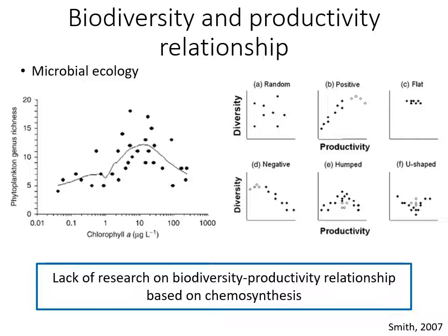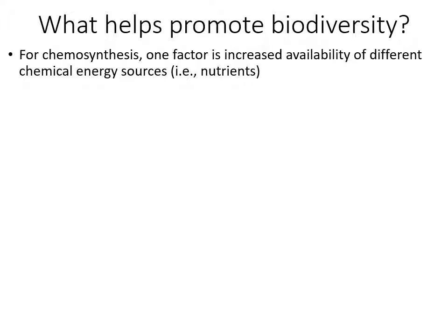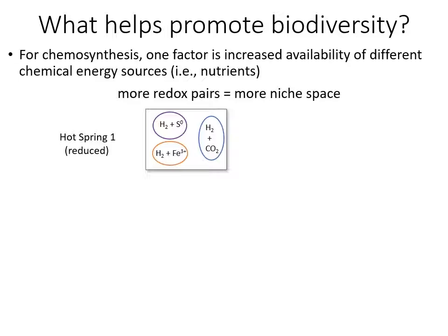However, there is a lack of research on biodiversity and productivity relationships that are solely based on chemosynthesis. Because of that, we need to think about how we can approach that question and what can help promote biodiversity in chemosynthetic environments. We hypothesize that for chemosynthesis, since it is based on the availability of nutrients or different chemical energy sources, more redox pairs — meaning more nutrients — will mean more niche space, which might support a higher biodiversity.